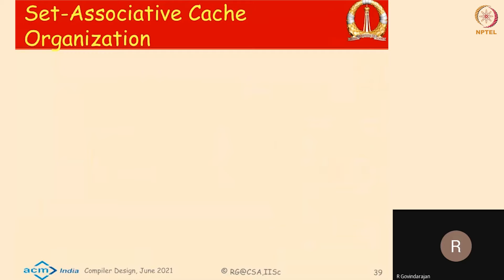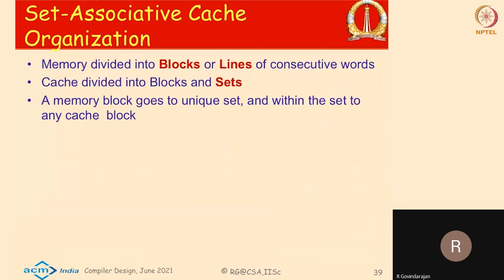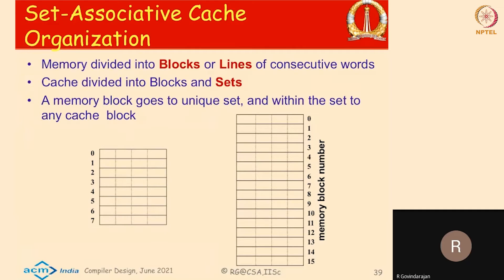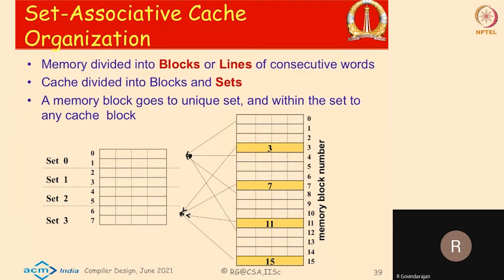In the last lecture, we were talking about cache organization. Most of you know about set associative cache organization, so I'm not going to go into the details. We are trying to look at set associative cache organization as the most general form, where direct mapped cache is set associative with associativity of one, and fully associative cache is set associative with one set and all lines mapped to that set.